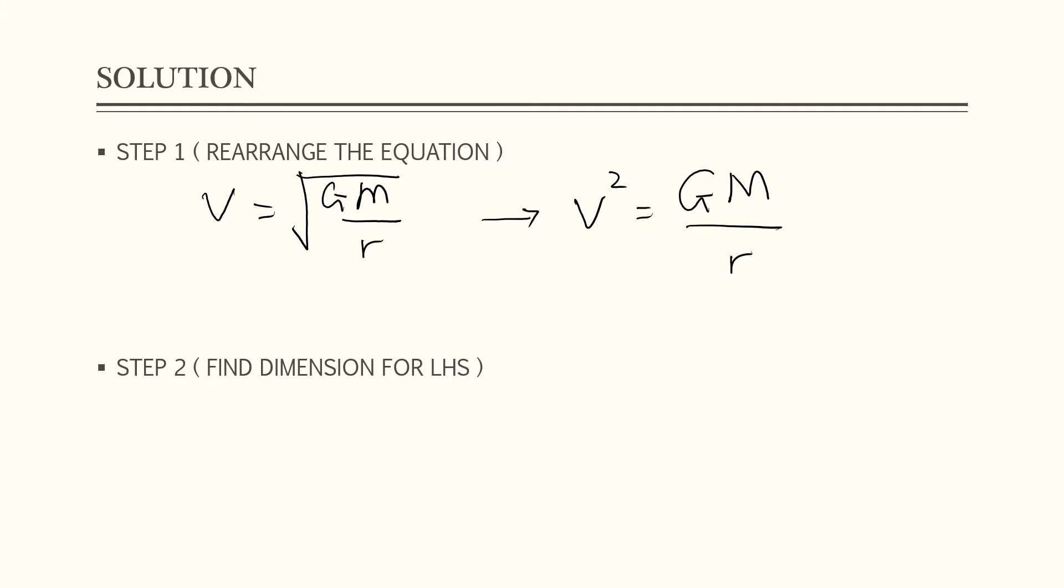So after we rearrange the equation, we can find step number 2, which is you can find the dimension for left hand side. This is we call the left hand side and this one is called the right hand side. We find the dimension for left hand side first. For left hand side, we have V squared. So make sure you write the square bracket of V. Square bracket means you have to find the dimension. Dimension for velocity is LT to the negative 1. So because here we have square, don't forget to put square here. So the equation becomes L squared T to the negative 2. Remember this is the dimension for left hand side.